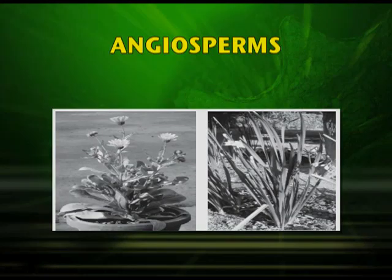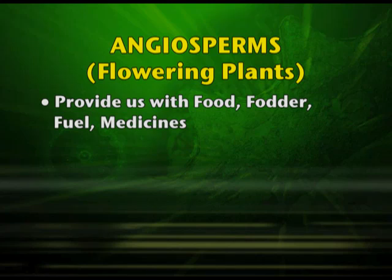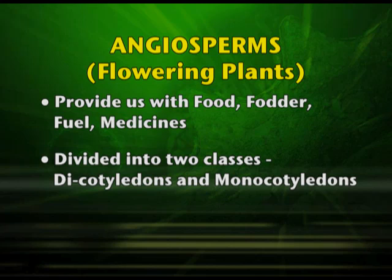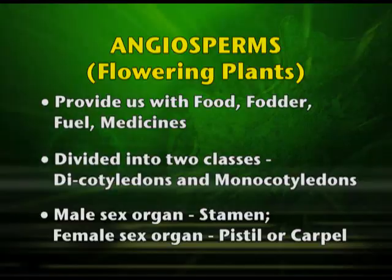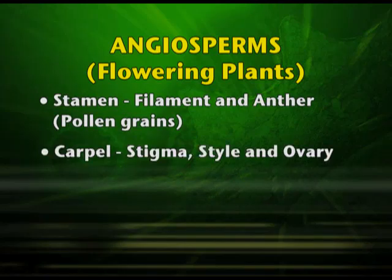Angiosperms are known as flowering plants and are of immense importance to us — they provide food, fodder, fuel, and medicines. They are divided into two classes: dicotyledons, which have two cotyledons, and monocotyledons, which have one cotyledon. The male sex organ is known as the stamen and the female sex organ is known as the pistil or carpel. The stamen has a filament and anther, and the carpel or pistil is made up of stigma, style, and ovary.